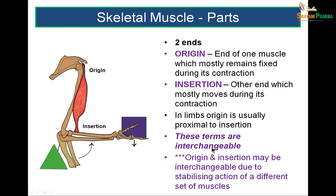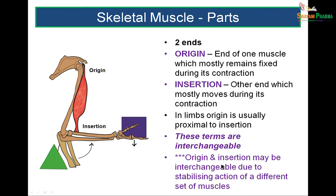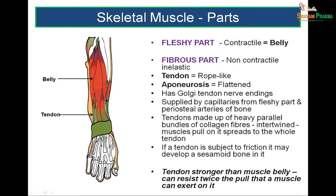Coming to the parts of skeletal muscle: skeletal muscle has two ends — origin and insertion. The origin is the part of the muscle that remains more fixed, and the insertion is the part which moves. These terms are interchangeable depending on which part is fixed and which is moving. Parts of skeletal muscle include the fleshy belly and the fibrous or tendinous part, sometimes expanded to form an aponeurosis. Tendons are stronger than the bellies, and if there is ever an injury of a muscle, it is usually the belly that will rupture rather than the tendon.